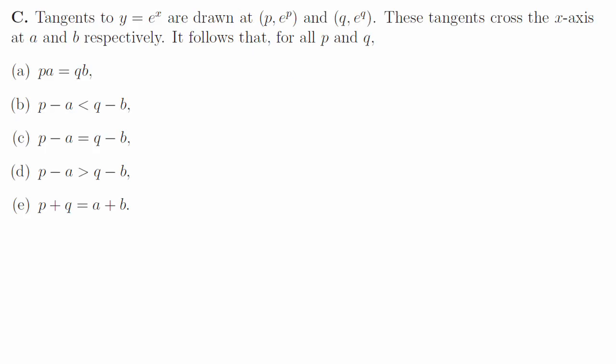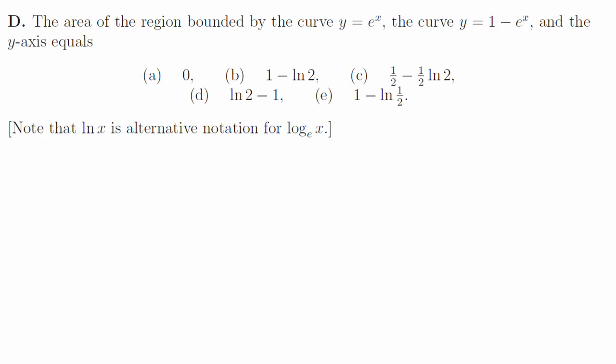1c. The tangent at p has gradient e to the p and it crosses the x-axis at p minus 1. Similarly, the other tangent crosses the axis at q minus 1, so p minus a is equal to q minus b, they're both equal to 1.